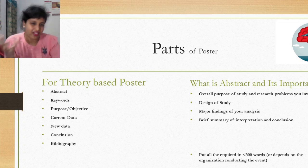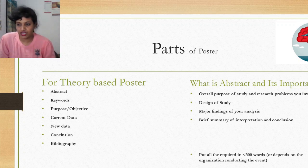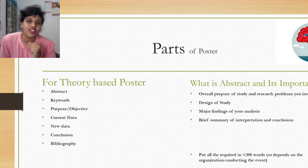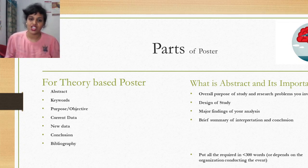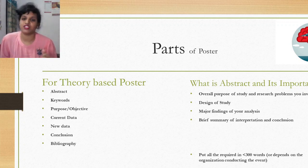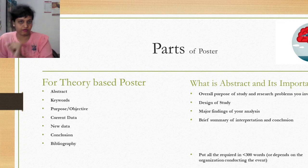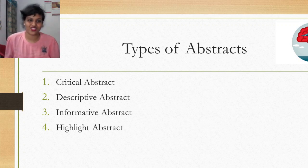The abstract is usually one paragraph of 300 words or less. It should cover: the overall purpose of the study and research problem you investigated, the design of the study, major findings of your analysis, and a brief summary of interpretation and conclusion. All these must be covered in one paragraph. The word limit varies by conference — the organizers will tell you.